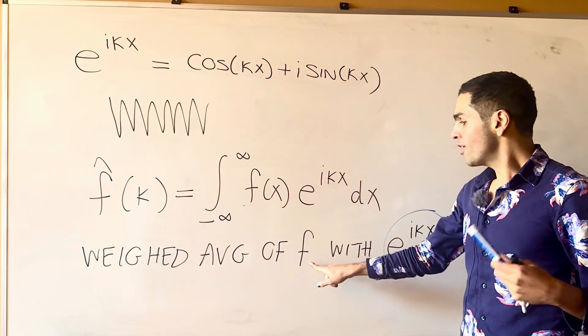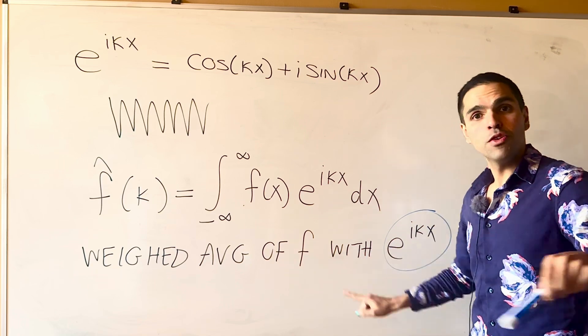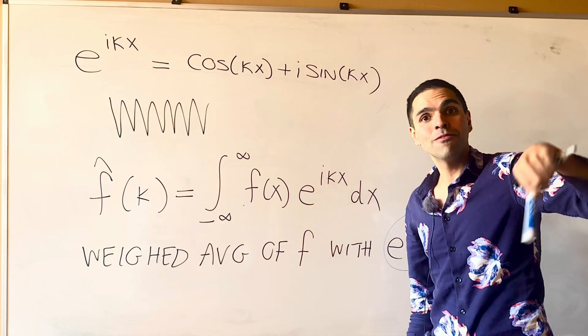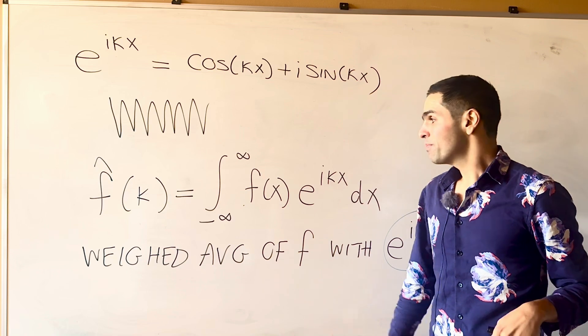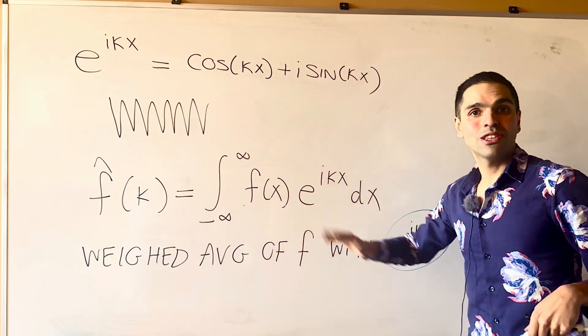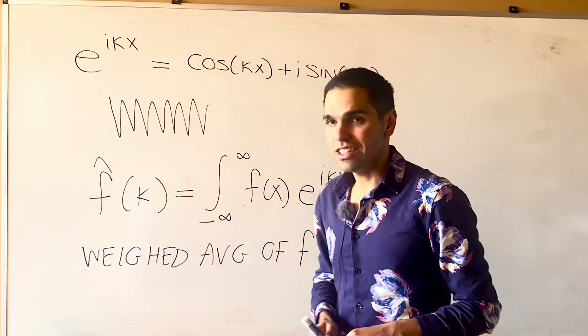And, the question is, well, what happens if you put f on that record player? How fast does it spin? And, this is sort of what the Fourier Transform tries to interpret.